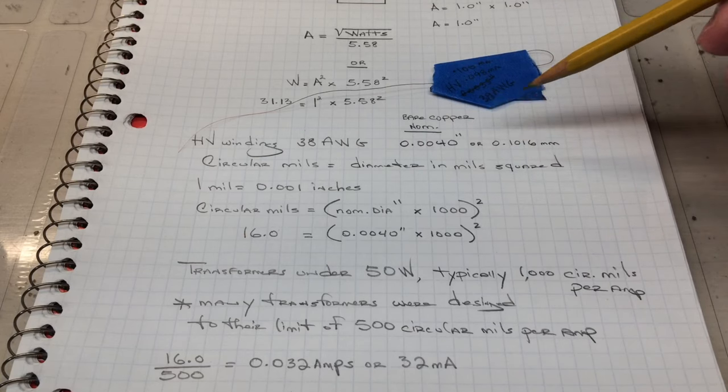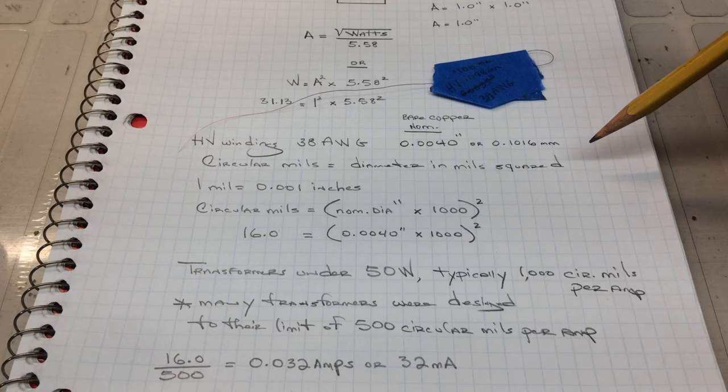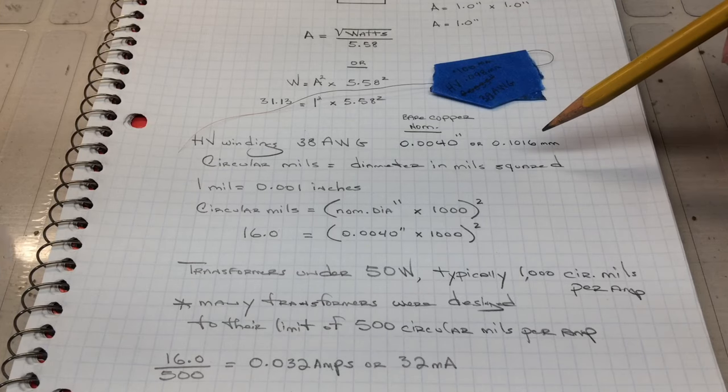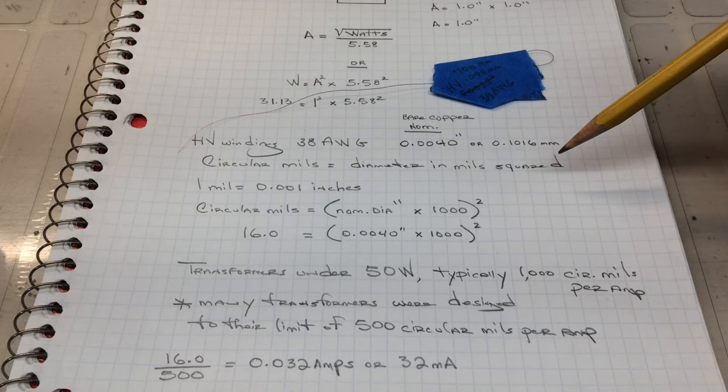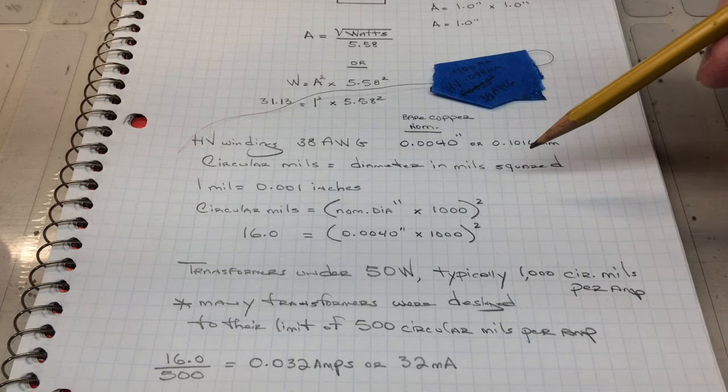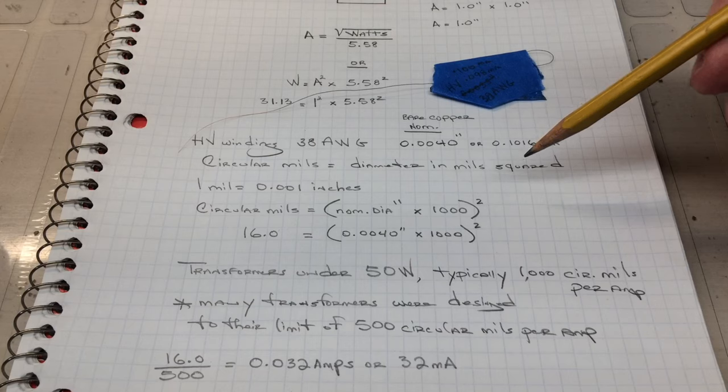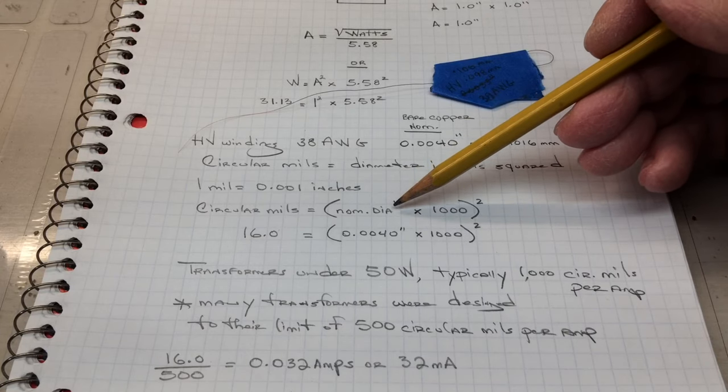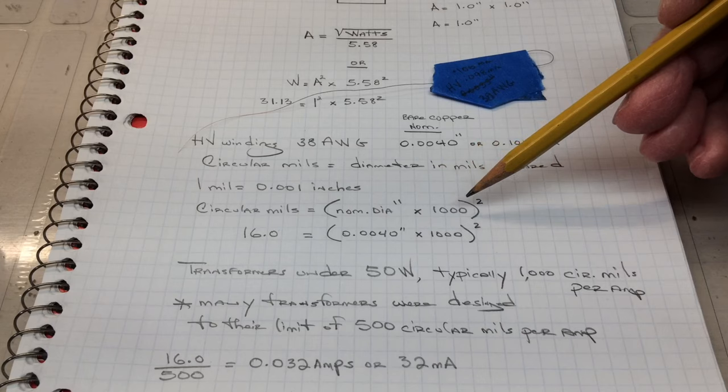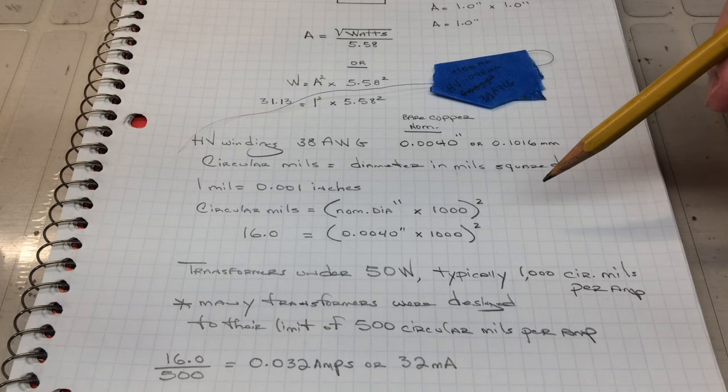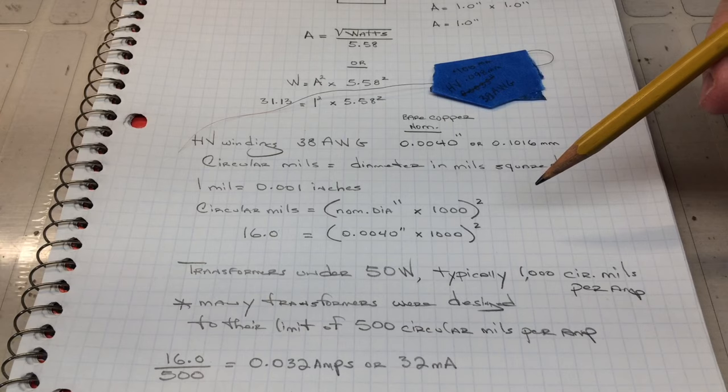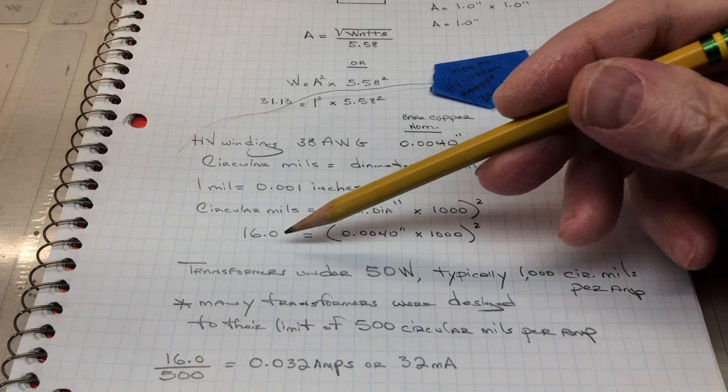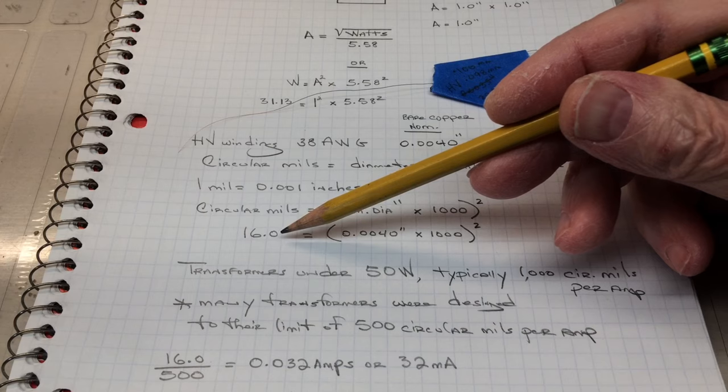You can see that's 0.004 inches or 0.1016 millimeters. Now if we talk about circular mills, that's the diameter in mills squared, so one mill again being one thousandths of an inch. You can calculate circular mills by taking the nominal diameter in inches, multiply that by one thousand and square that number. So in this case the 38 AWG comes back to 16 circular mills.